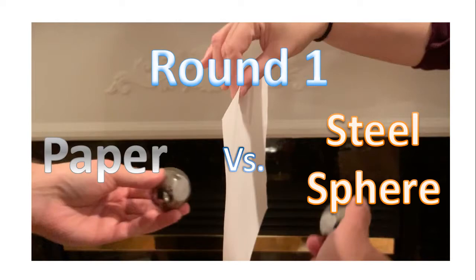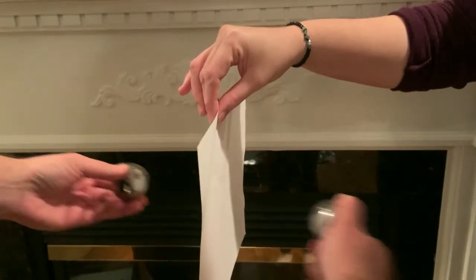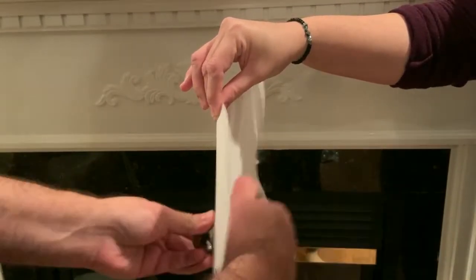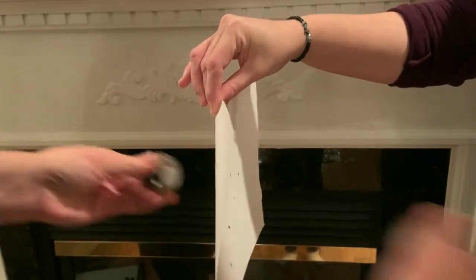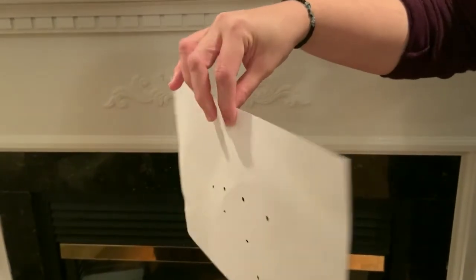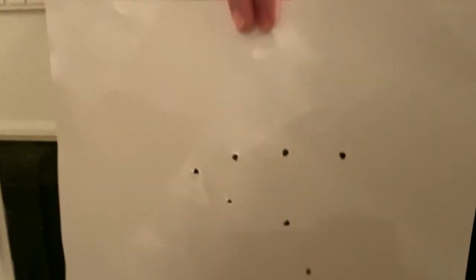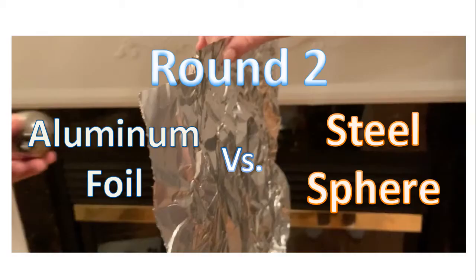Round 1. Paper vs. Steel Sphere. Round 2. Aluminum foil vs. Steel Sphere.